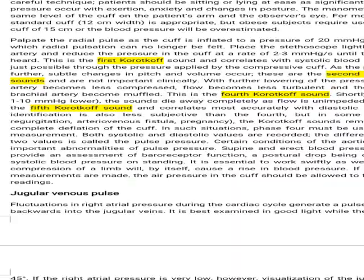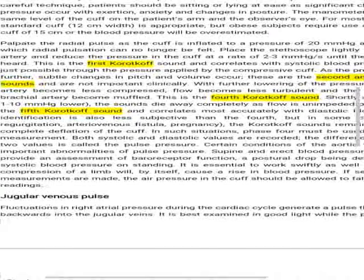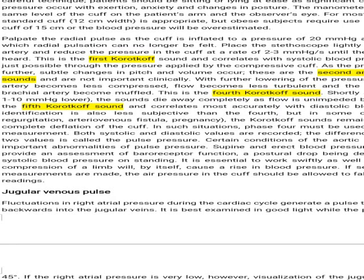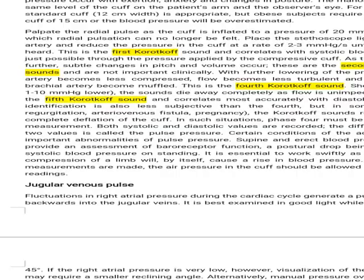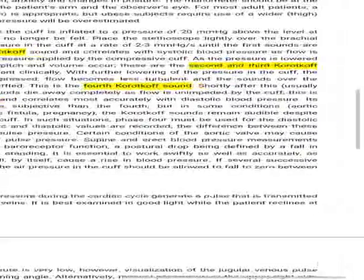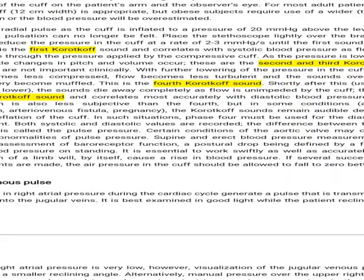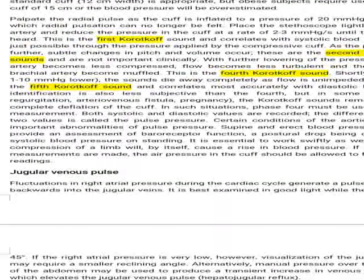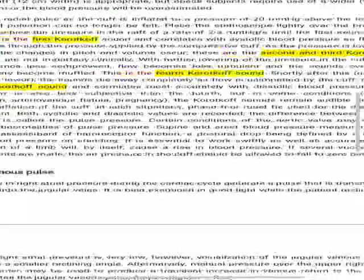Both systolic and diastolic values are recorded. The difference between these two values is called the pulse pressure. Certain conditions of the aortic valve may cause important abnormalities of pulse pressure. Supine and erect blood pressure measurements provide an assessment of baroreceptor function, a postural drop being defined by a fall in systolic blood pressure on standing. It is essential to work swiftly as well as accurately, as compression of a limb will itself cause a rise in blood pressure if several successive measurements are made. The air pressure in the cuff should be allowed to fall to zero between readings.